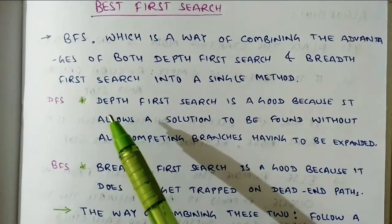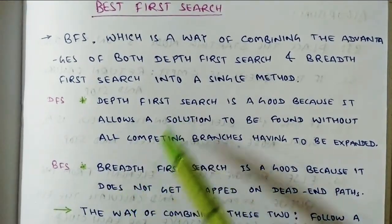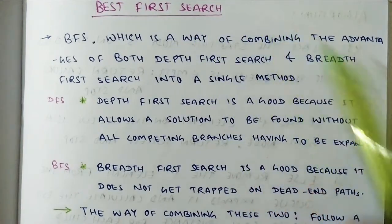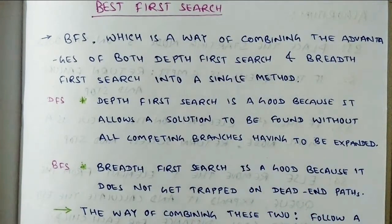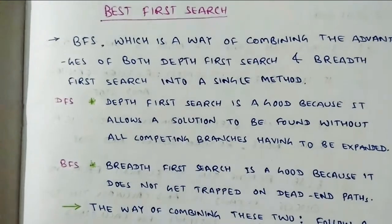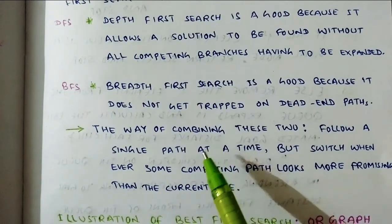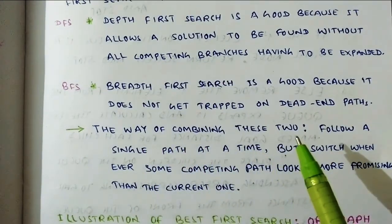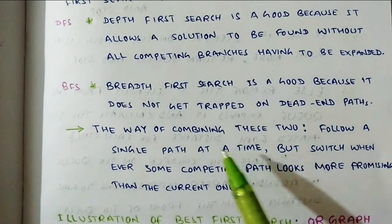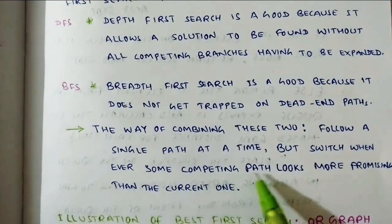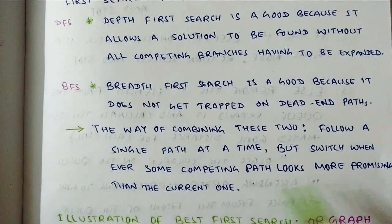So if we talk about the DFS and BFS advantage, we combine both BFS techniques and Best First Search techniques in a single method. Now we will see how we decide which node to pick from the start node. The way of combining these two techniques is: follow a single path at a time, but switch whenever some competing path looks more promising than the current one.